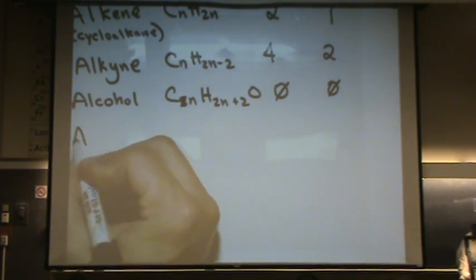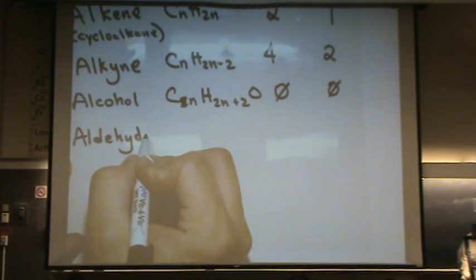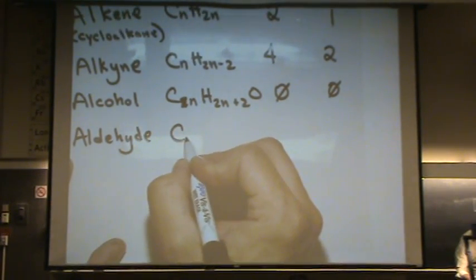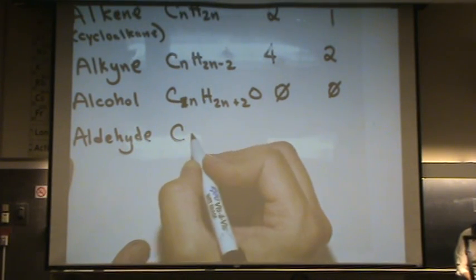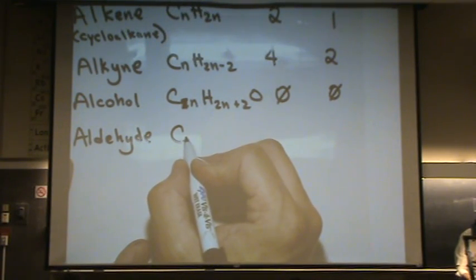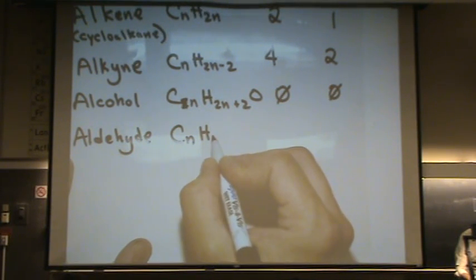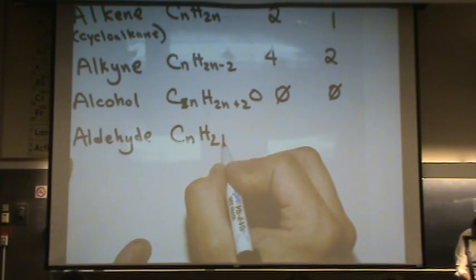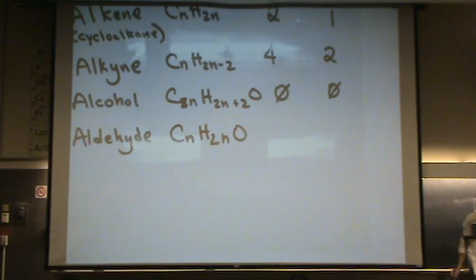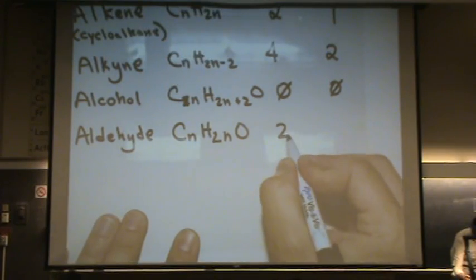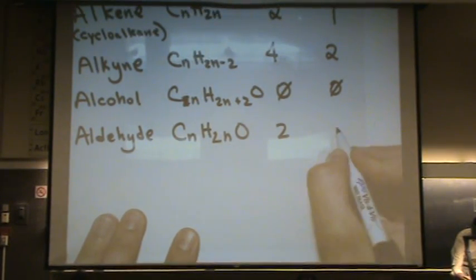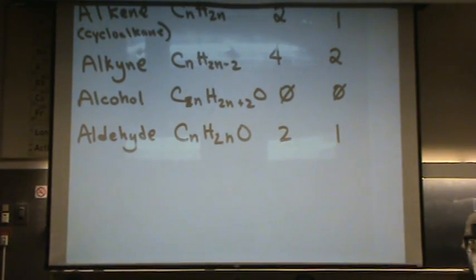Let's look at an aldehyde. Again, you don't need to know these formulas, but if I give you the formula, you need to be able to figure out the degree of unsaturation. Aldehyde is missing 2 hydrogens because it's only 2n, not 2n plus 2, so this has 1 degree of unsaturation. So hopefully you're getting the idea.